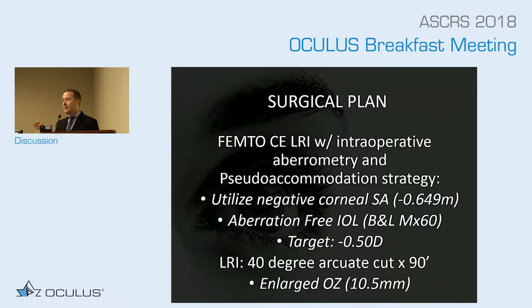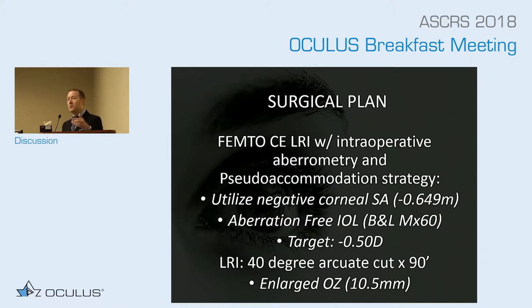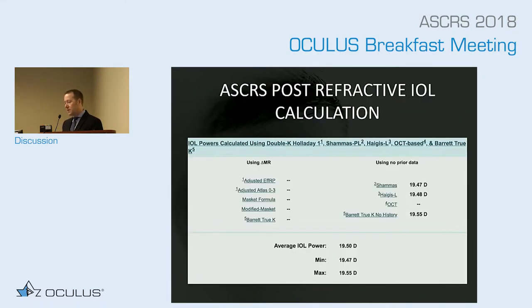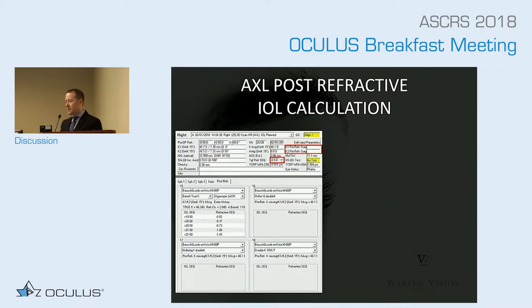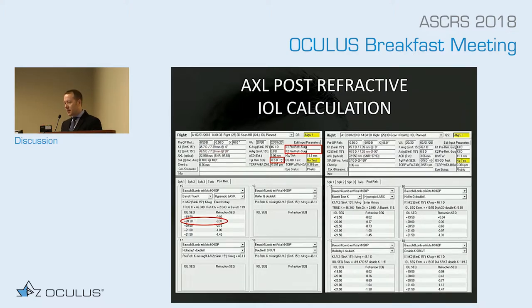Not uncommonly we end up with excellent distance vision and very useful reading vision. But this lady was adamant about wanting to read, so I slightly offset the defocus. Looking at Dan Reinstein's work on pseudo-accommodation at the corneal plane, he also adds mini defocus in addition to iatrogenically inducing negative spherical aberration on the cornea to find his sweet spot. A minus 19.5 diopter lens was predicted by the ASCRS calculator with no prior refractive history; the IOL Master predicted a 20-diopter lens.